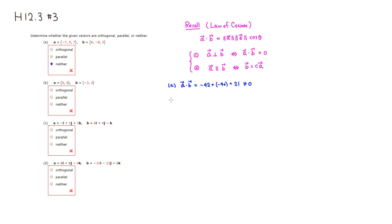Let's look at part B. Again, computing vector A dotted with vector B: 6 times negative 3 is negative 18, plus 6 times 3 is positive 18. This becomes zero, which means that they are perpendicular or orthogonal.